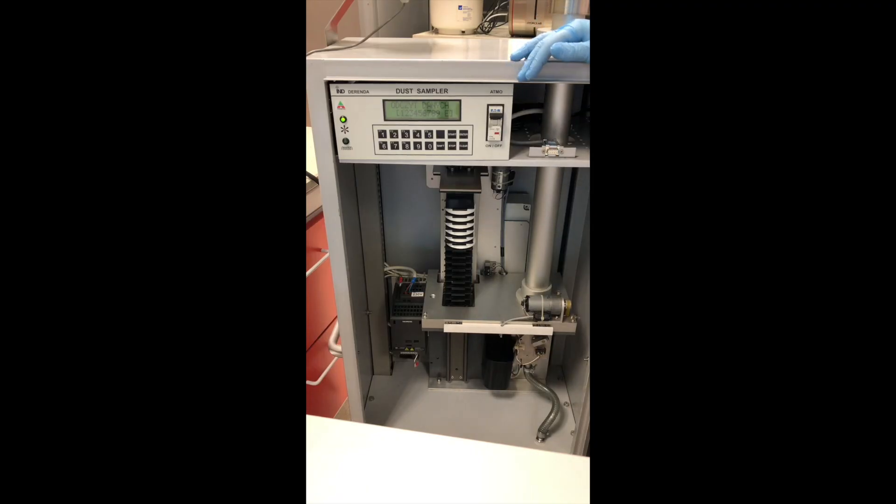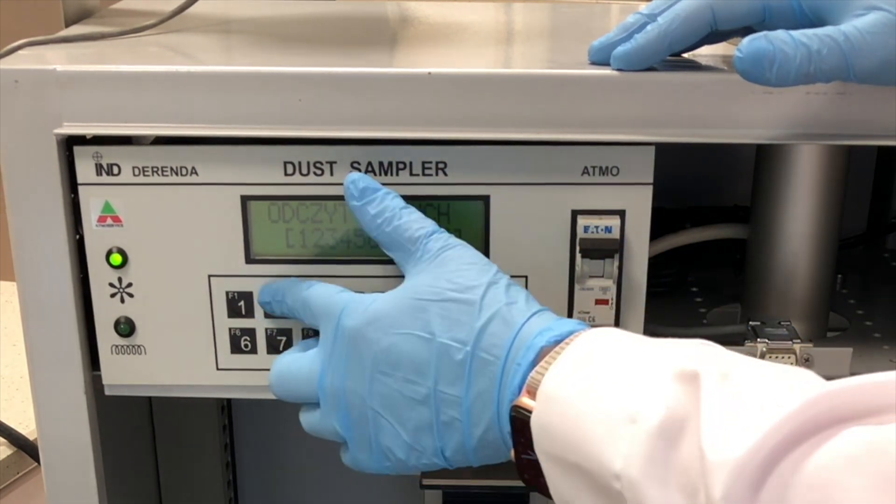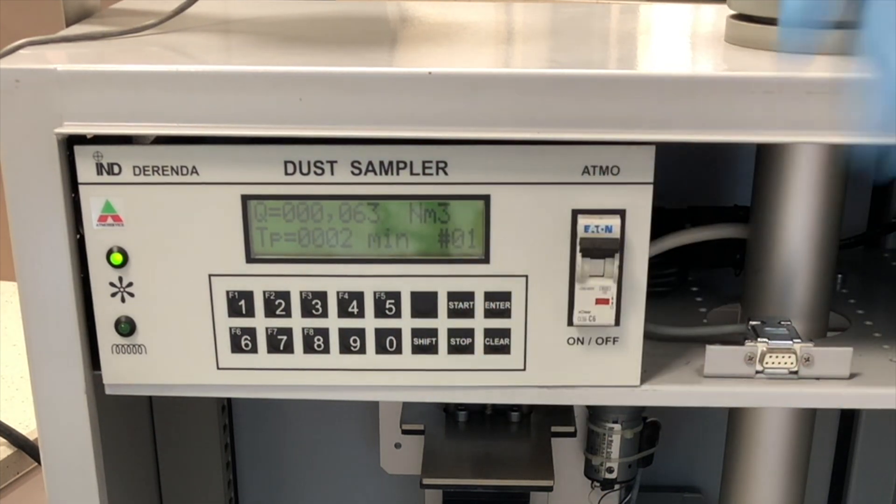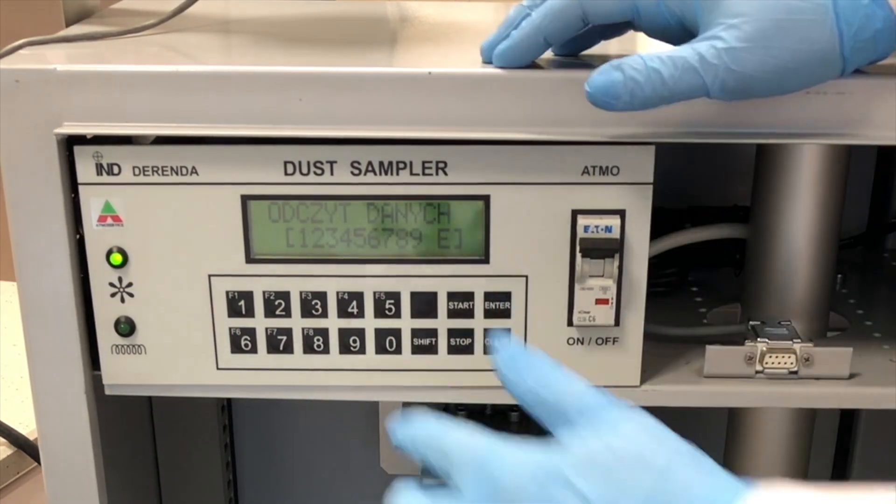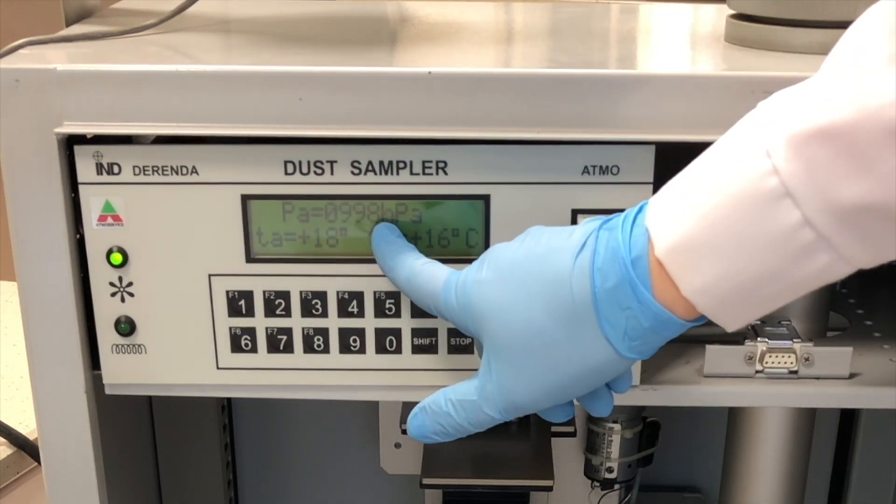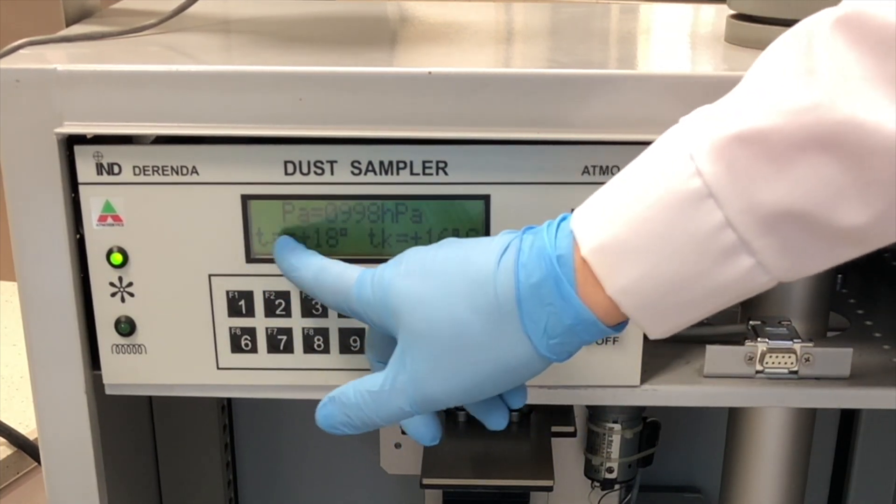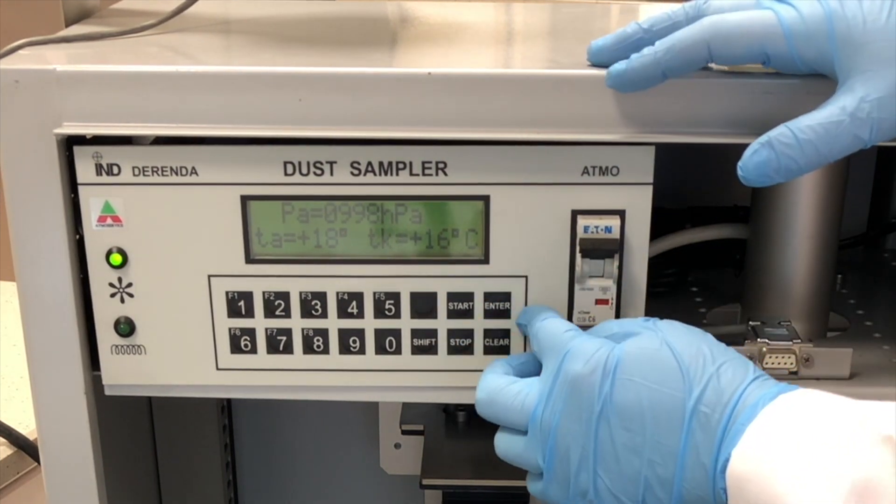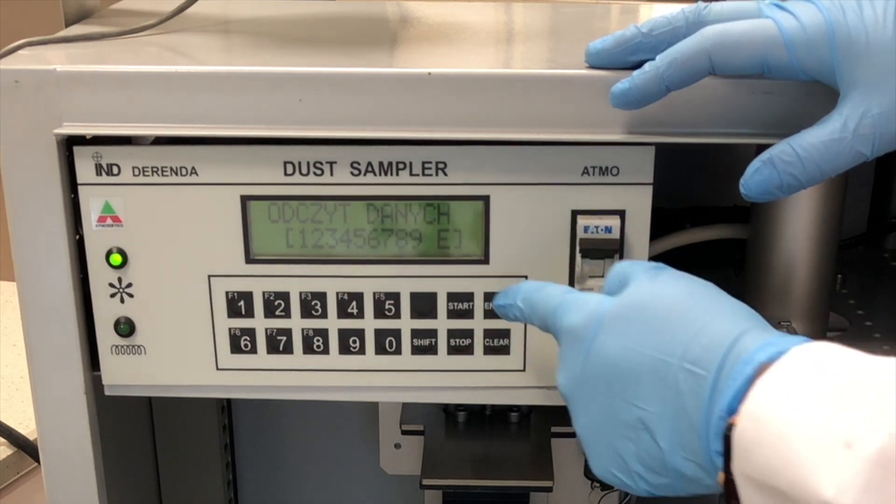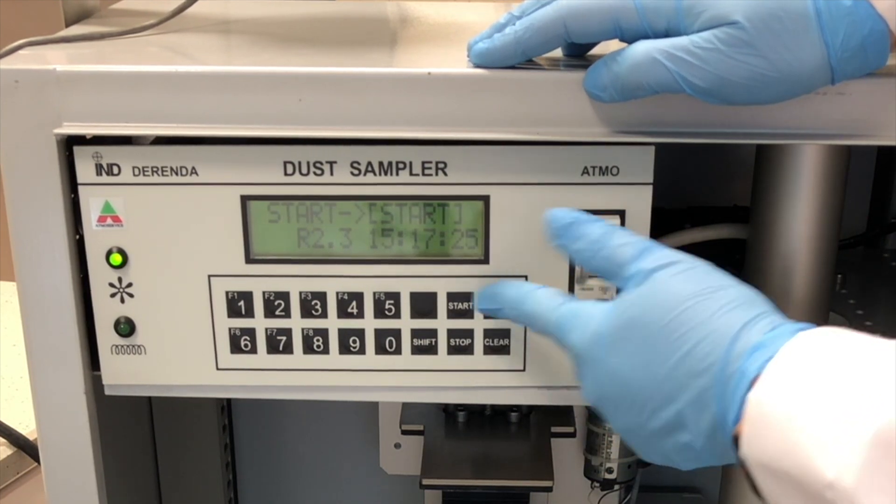You can check what are the data. When you press 1 you've got the volume of air in cubic meter and the time. When you press 2 you've got the volume of air which went through the filter but in the standard conditions. When you enter 3 you've got the atmospheric pressure in hectopascals and you've got the A, it means the ambient temperature of air and this is the temperature of the equipment. The other numbers are connected with the parameters of the sampler.